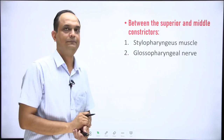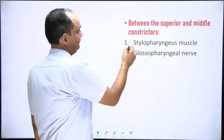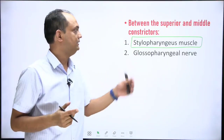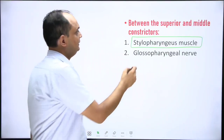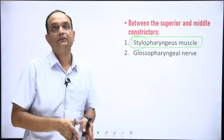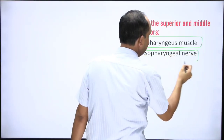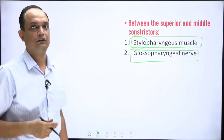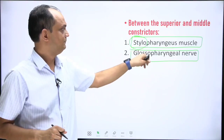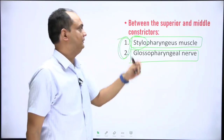The gap between the superior and middle constrictor transmits the stylopharyngeus muscle, which is the one pharyngeal muscle arising outside the pharynx. Of the three longitudinal muscles — stylopharyngeus, salpingopharyngeus, and palatopharyngeus — the stylopharyngeus arises from the outer side and inserts inside the pharynx by passing through this gap. Importantly, this muscle runs along with its own nerve supply: the glossopharyngeal nerve, the nerve of the third pharyngeal arch, which runs along with the stylopharyngeus and supplies it. Both these structures enter the pharynx through the gap between the superior and middle constrictor.